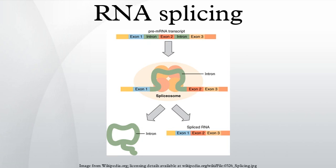Biochemical mechanism: Spliceosomal splicing and self-splicing involve a two-step biochemical process. Both steps involve transesterification reactions that occur between RNA nucleotides. tRNA splicing, however, is an exception and does not occur by transesterification. Spliceosomal and self-splicing transesterification reactions occur via two sequential transesterification reactions. First, the 3-OH of a specific branch point nucleotide within the intron performs a nucleophilic attack on the first nucleotide of the intron at the five-prime splice site, forming the lariat intermediate. Second, the 3-OH of the released five-prime exon then performs a nucleophilic attack at the last nucleotide of the intron at the three-prime splice site, thus joining the exons and releasing the intron lariat.